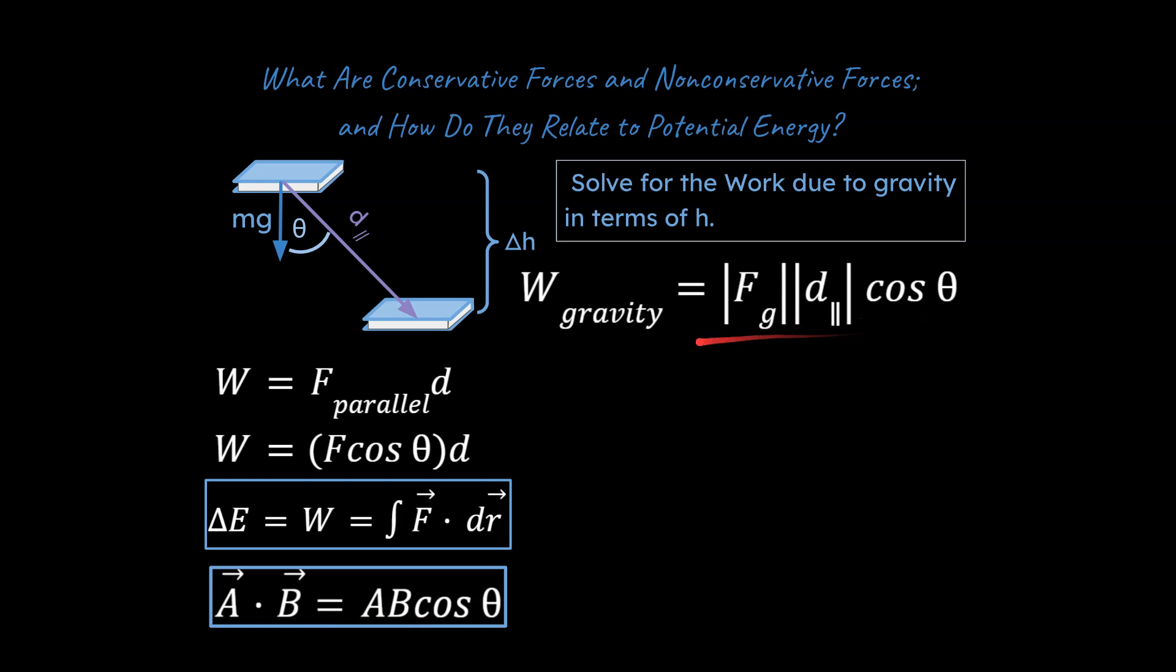So this is how we would apply it in this case. It would be the absolute value of the force due to gravity times the absolute value of d parallel, is what I'm calling it right now, times cosine of the angle between them. Well, if we want to get this in terms of h, and I have added my delta h over here, then we can get an idea. We would say we need to do something with this theta where we relate d parallel to our delta h. Let's go ahead and do that.